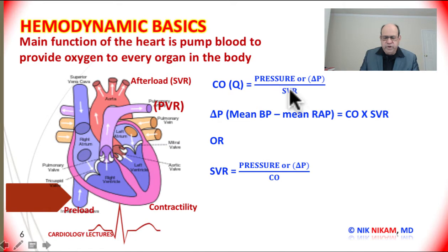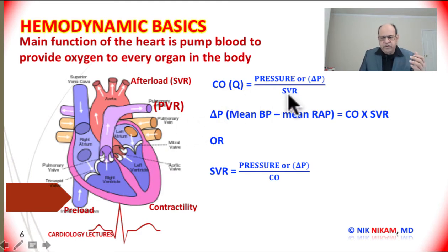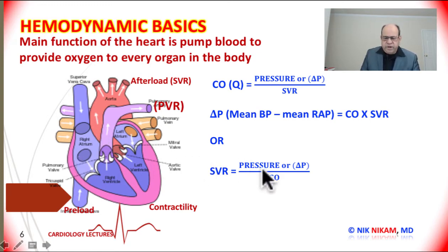If we know two of the three parameters, we can calculate the third. For example, if we know the delta pressure — which is the mean arterial pressure minus the mean right atrial pressure, the pressure difference between the aorta and the right atrium forming the beginning and end of the systemic circulation — this pressure difference divided by the resistance of the blood vessels helps us determine cardiac output. We can also rearrange the formula to calculate systemic vascular resistance if we know cardiac output and pressure, and vice versa. The formula for systemic vascular resistance is delta P — the difference between mean aortic pressure and mean right atrial pressure — divided by cardiac output.